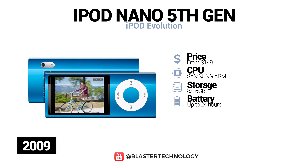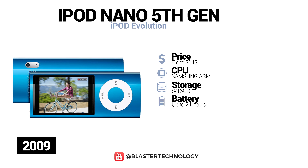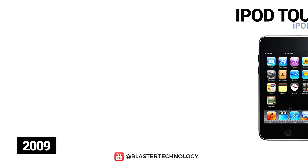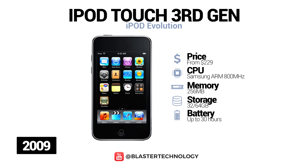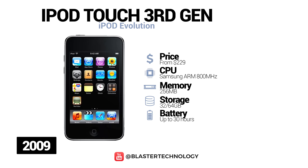Also in 2009, Apple launched the fifth generation iPod Nano, which was the first iPod to have a camcorder, a larger screen, a radio, a speaker, and a microphone. The third generation iPod Touch was also launched in 2009 and was updated to integrate support for voice control and bundled remote earphones.